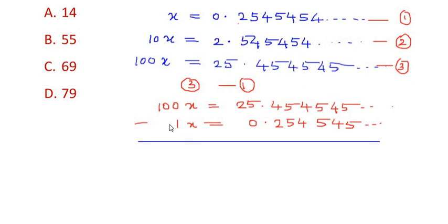Now 100 minus 1 gives us 99x. Now if we look at this side, the 5 minus 5 becomes 0, 4 minus 4 becomes 0, 5 minus 5 is 0, 4 minus 2 is 2, 5 minus 0 is 5, and 2 minus 0 is 2. So you can see most of the decimal places have changed to 0, so this is acceptable.